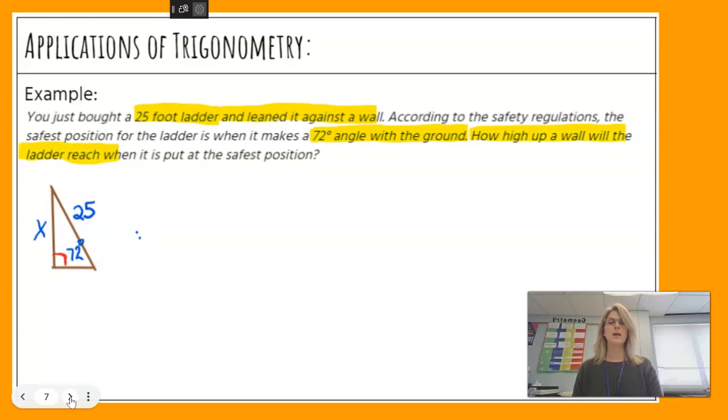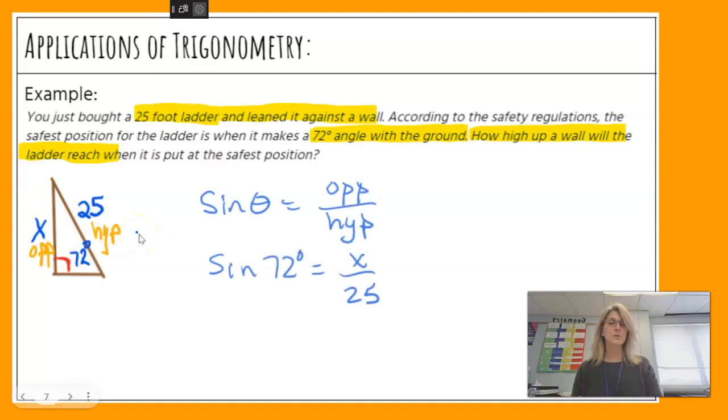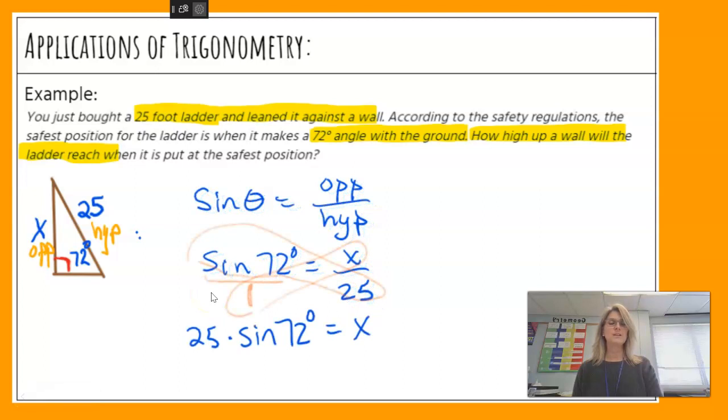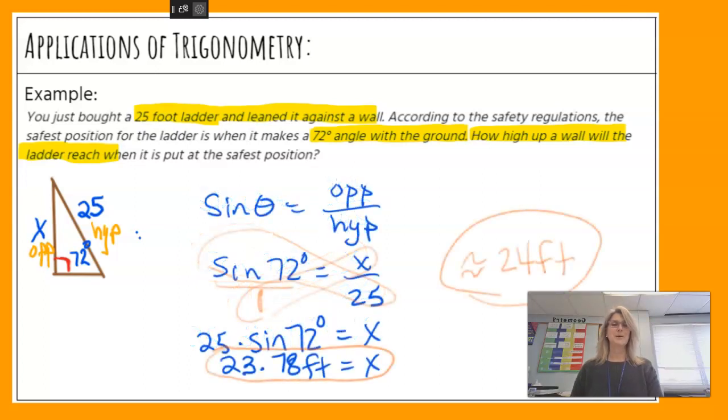So let's label our sides. I've got the hypotenuse is 25, and x is my opposite. So which trig function am I going to use? I hope you said sine. Let's set up the sine. Sine of 72 degrees is going to be opposite is x over 25. Make a proportion. Let's solve it, so I end up with 25 times the sine of 72. Tell me what you got. I hope you got 23.78 feet.